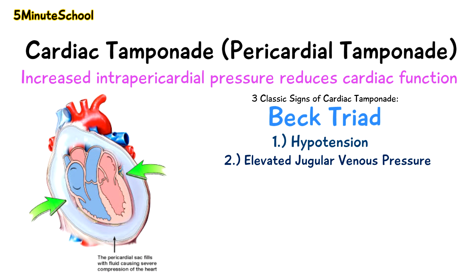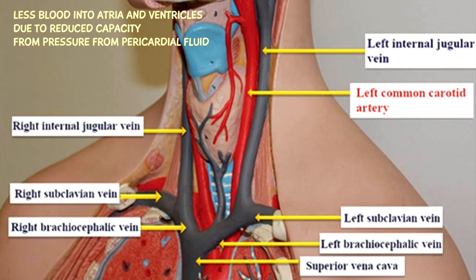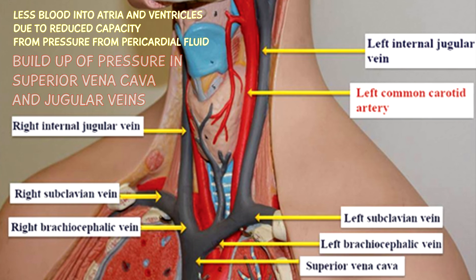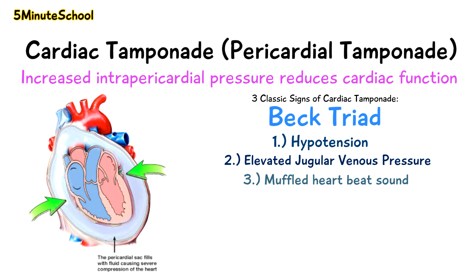The second is elevated jugular venous pressure, because less blood is entering the atria and less is going through the tricuspid valve to the ventricle, causing a build-up of pressure in the superior vena cava and the corresponding jugular vein. The third is a muffled heartbeat — the typical lub-dub sound is muffled due to the fluid build-up.